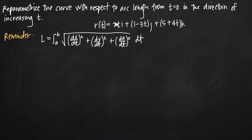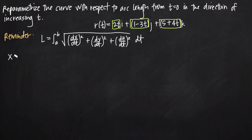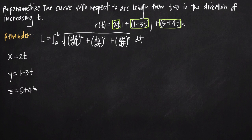We take the coefficients on i, j, and k — everything in front of i, j, and k — and set those equal to x, y, and z respectively. Those are our parametric equations. So we have x equals 2t, y equals 1 minus 3t, and z equals 5 plus 4t.